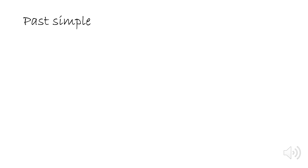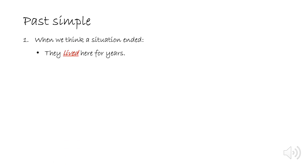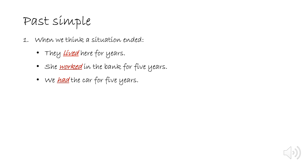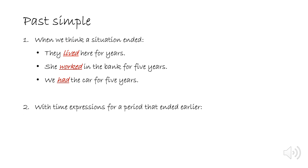Now let's look at when we use the past simple. The first situation is when we think a situation has ended. For example: 'They lived here for years,' 'She worked in the bank for five years,' 'We had the car for five years.' These examples show the situation or action has already ended — 'They lived here for years' means they used to live there but now they don't.